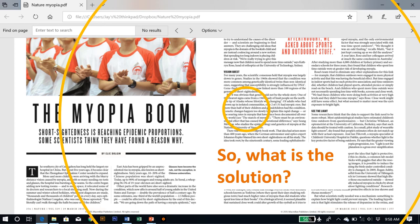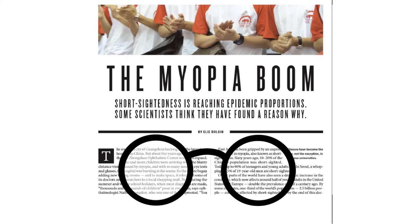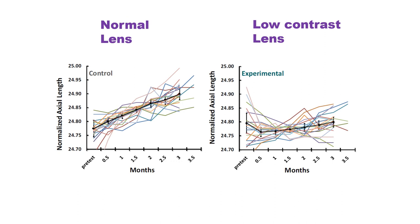So how do we prevent myopia? We reasoned that if we could reduce peripheral contrast, it would reduce the signals for eye growth and prevent myopia. Something like this. This predicted that if we could make glasses that reduce peripheral contrast, it could be a solution to myopia. We did the following experiment. We recruited 14 children between the ages of 7 and 11 who had fast-progressing myopia. We had them wear glasses where one lens was the standard of care and the other lens was designed to reduce contrast, as illustrated here.